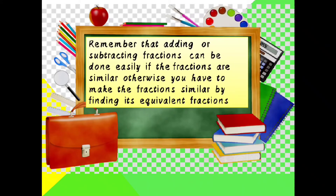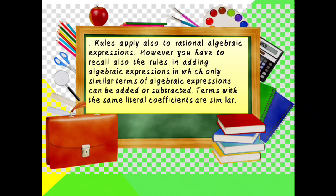Remember that adding or subtracting fractions can be done easily if the fractions are similar. Otherwise, you have to make the fractions similar by finding equivalent fractions. These rules apply also to rational algebraic expressions. However, you also have to recall the rules in adding algebraic expressions, in which only similar terms can be added or subtracted — terms with the same literal coefficient are similar.